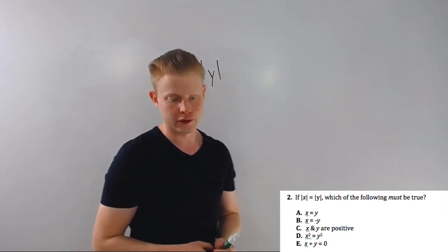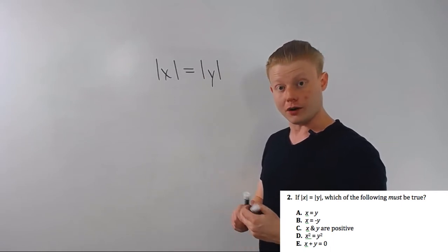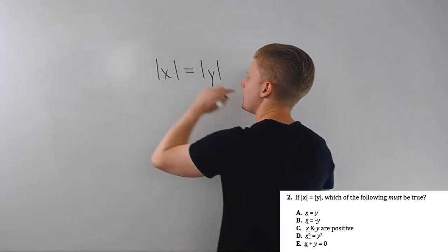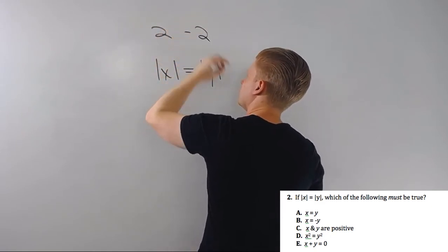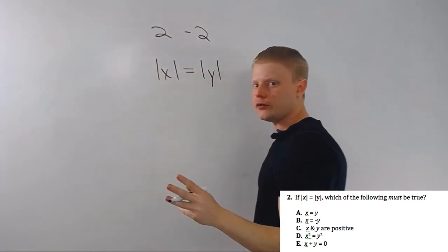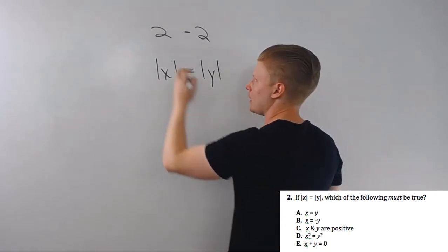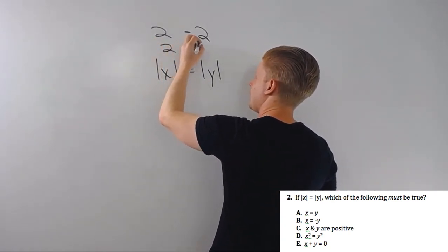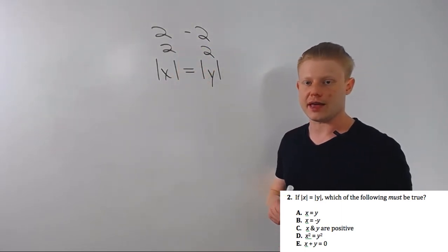So must be turns into could be, true turns into false. So what I want to try to do is prove that these answer choices can be wrong or can be false. They don't have to be false all the time, just as long as they're false once. That's enough for them to not must be true. Must be true means always true. X equals y? Well let's get sorted before by picking some numbers.